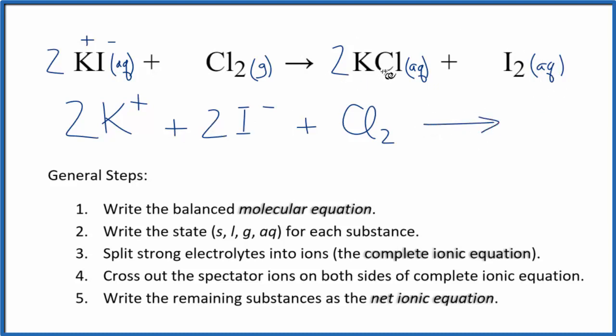The products, we'd have KCl, which is aqueous. It's a strong electrolyte. We'll have a plus and a minus there for the charges. 2K⁺, plus 2Cl⁻, two chloride ions. And this I₂, this isn't a strong electrolyte. It's not an ionic compound. And though it's aqueous, it's dissolved in the water, it's not going to split apart. We'll write I₂ there. So this is our complete ionic equation.